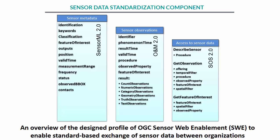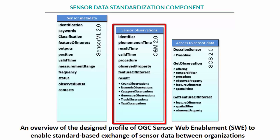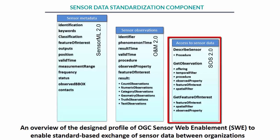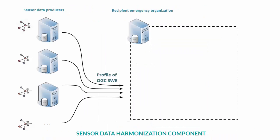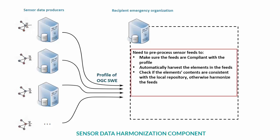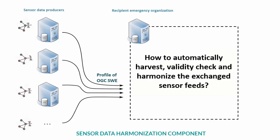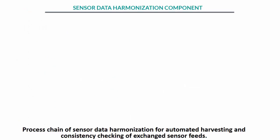To address this shortcoming, and as the objective of the sensor data standardization component, a profile of current OGC SWE standards is designed to enable standard-based exchange of sensor data between disaster-involved organizations. An overview of the design profile is shown here. The profile consists of necessary elements for description of sensor metadata, sensor observations, and the required operations for web-based access to organizational sensor data. Once sensor data feeds described based on the profile reach an emergency organization, there is a need to pre-process the feeds to ensure they are compliant with the profile, automatically harvest various elements in the feeds, and check if the feeds are compliant with the local repository at the recipient organization, otherwise harmonize the feeds.